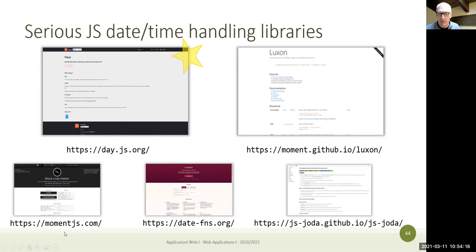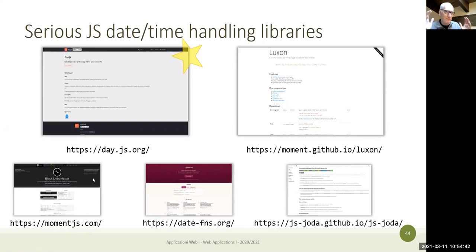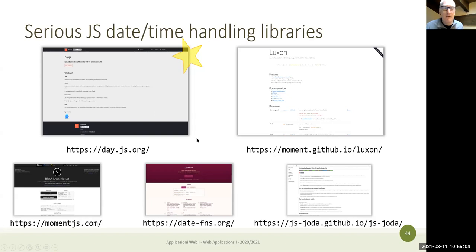Moment was very complete and widely used in the past, but it got effectively shamed by Google: Chrome developer tools added a feature showing library sizes, and Moment was huge. Chrome started spitting out warnings about large library use, slowing down your application, and consuming bandwidth. The Moment developers responded by saying they'd stop development on it.